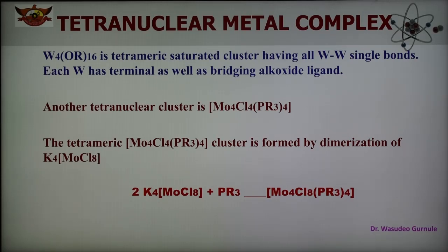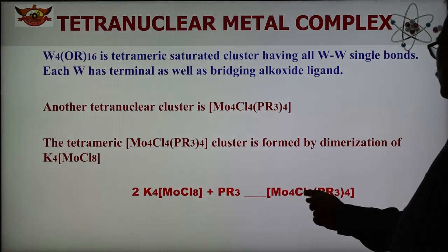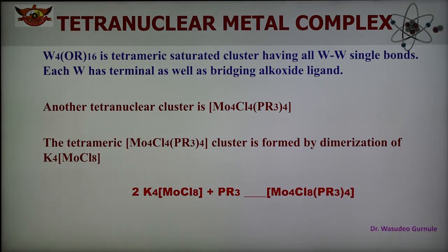Another example of a tetranuclear cluster is Mo4Cl4(PR3)4. This is a tetrameric molybdenum compound formed by dimerization of K4MoCl8. So K4MoCl8 reacts with PR3 to give Mo4Cl8(PR3)4, where PR3 is trialkylphosphine and 4 molecules join together to form this cluster.